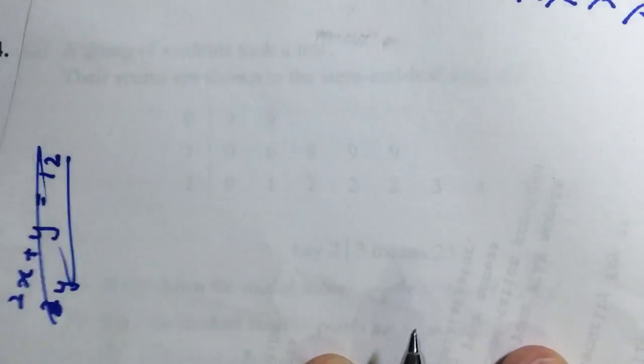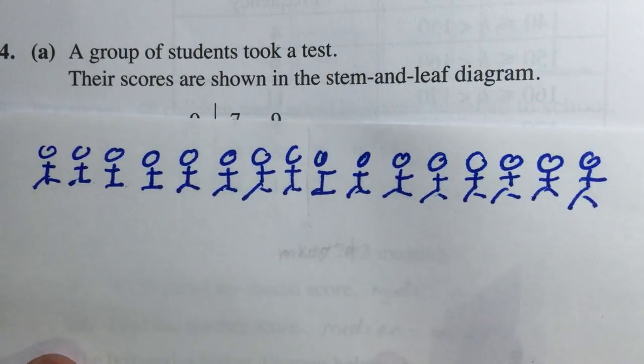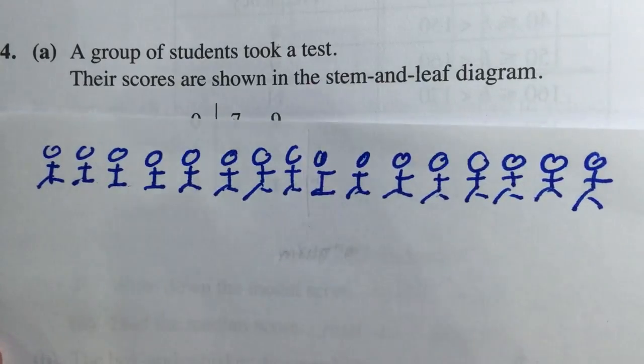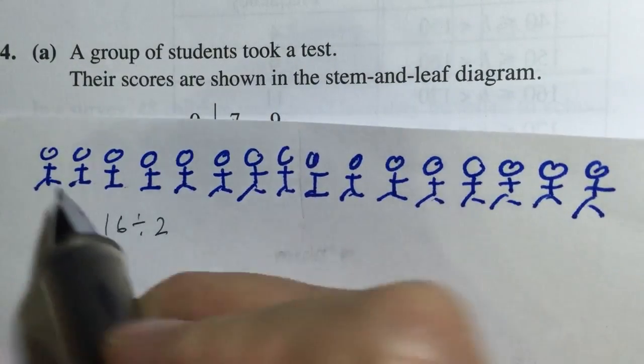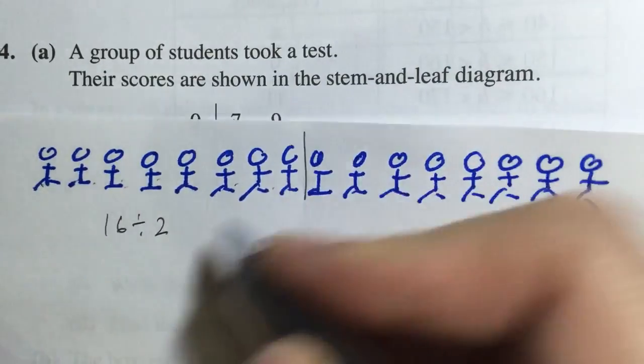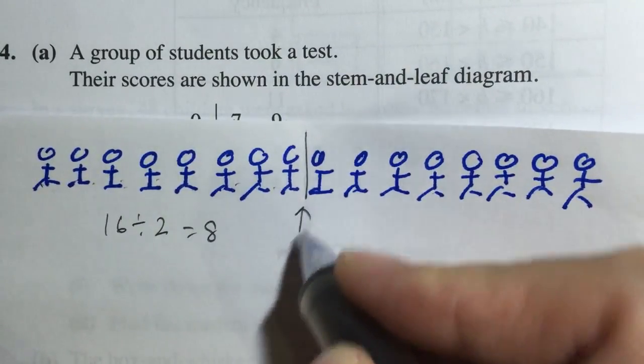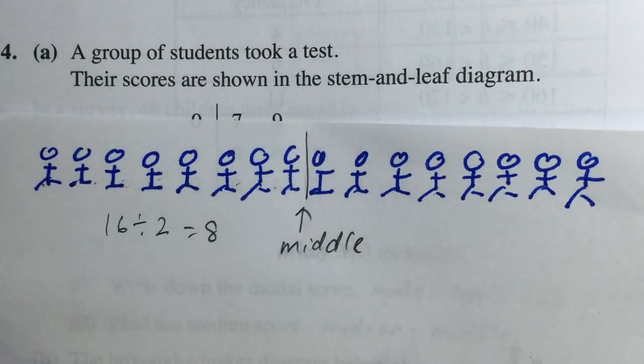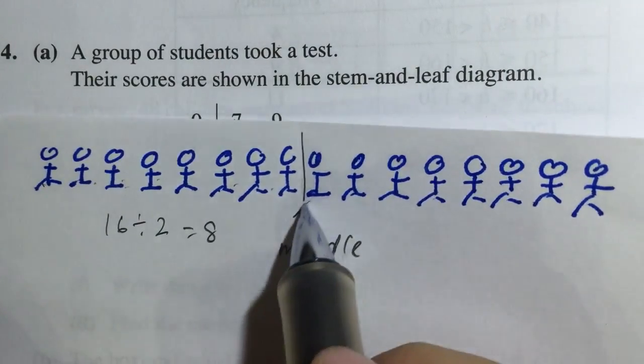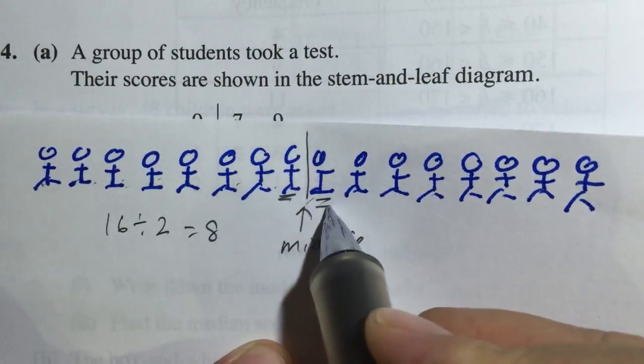You imagine that there are 16 people, and you need to find a middle person. So if you see 16 divided by 2: 1, 2, 3, 4, 5, 6, 7, 8, this is where the middle is. And as you can see there is actually nobody in the middle, but the middle is between the 8th person and the 9th person.